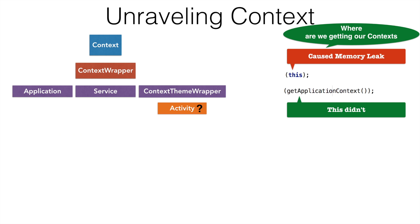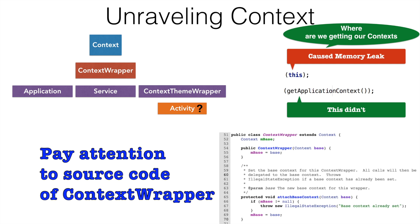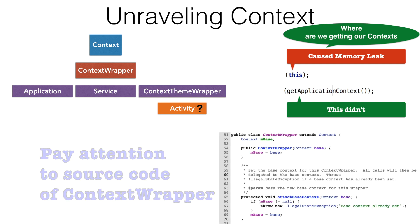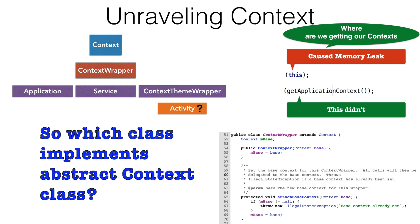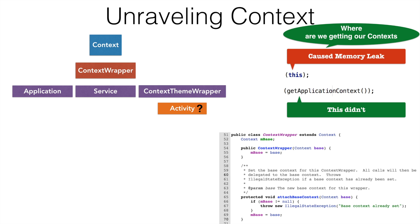Let us have a look at the source code of the ContextWrapper class. The constructor of ContextWrapper just receives the context. It doesn't even try to implement the context — so which is the object that is actually implementing the context abstract class?